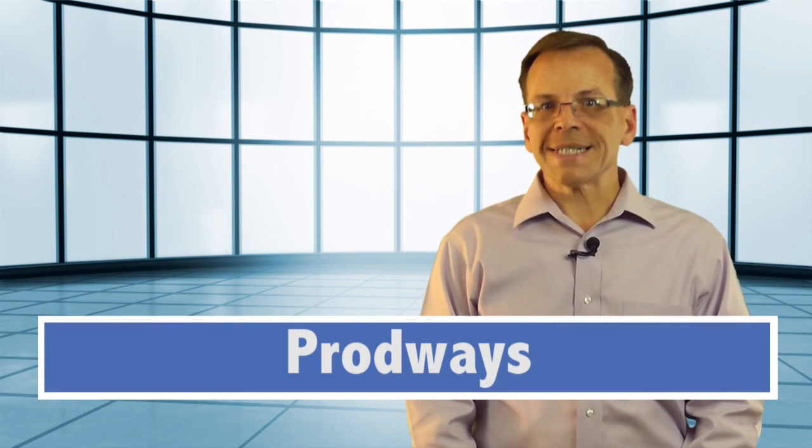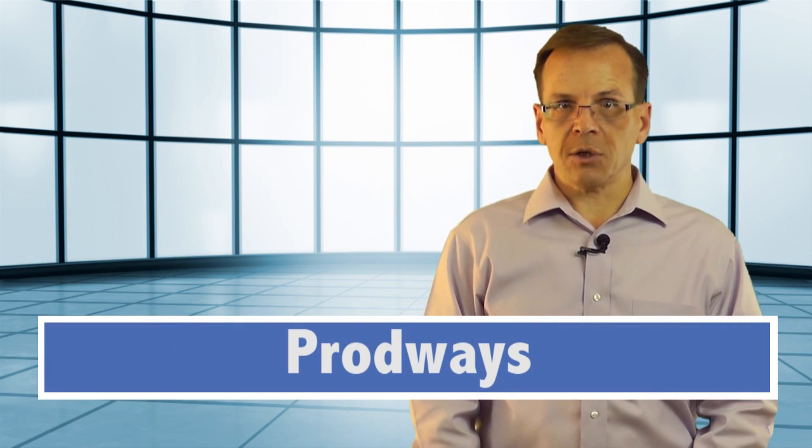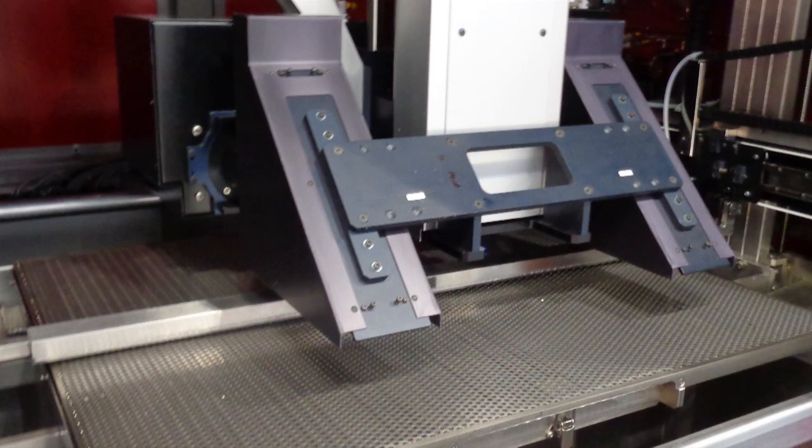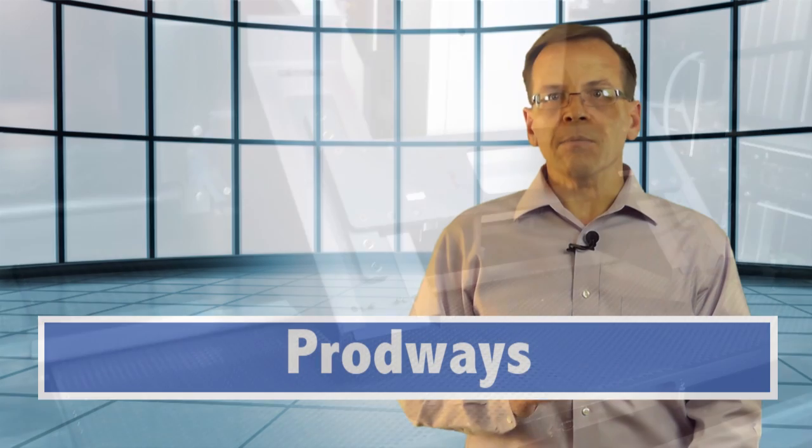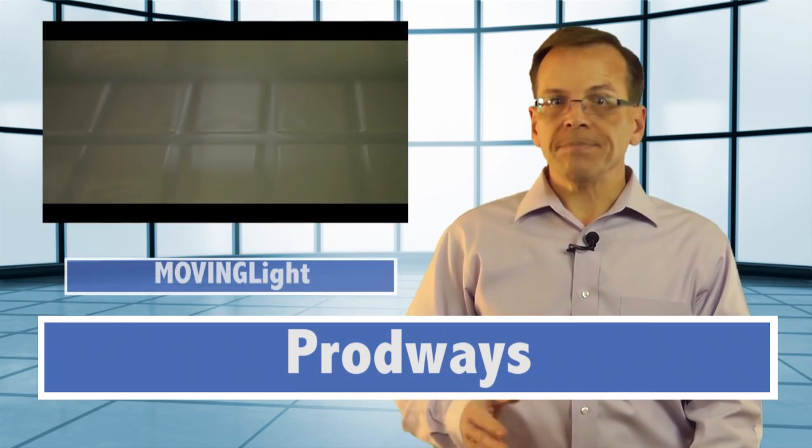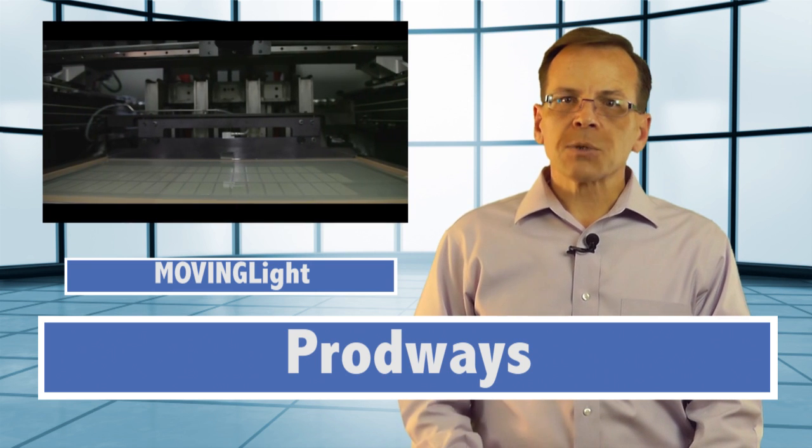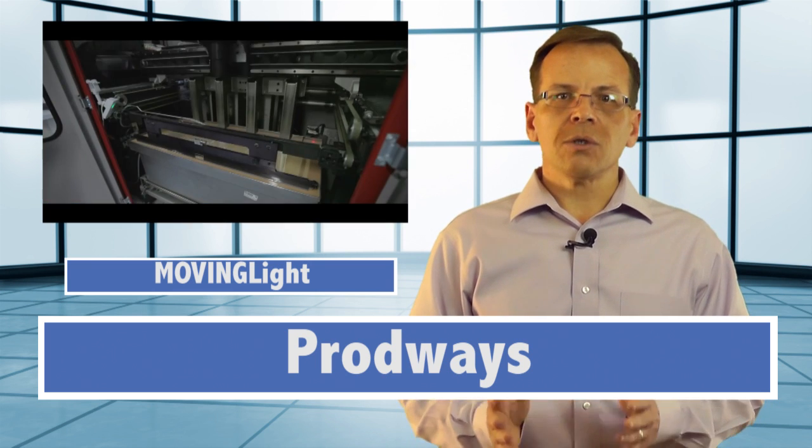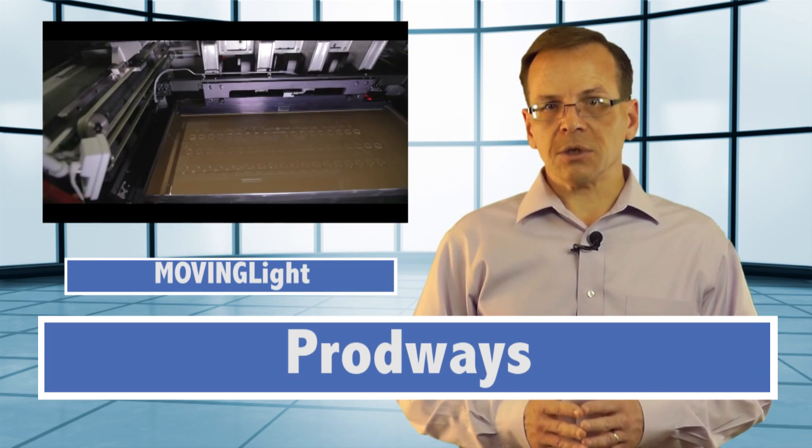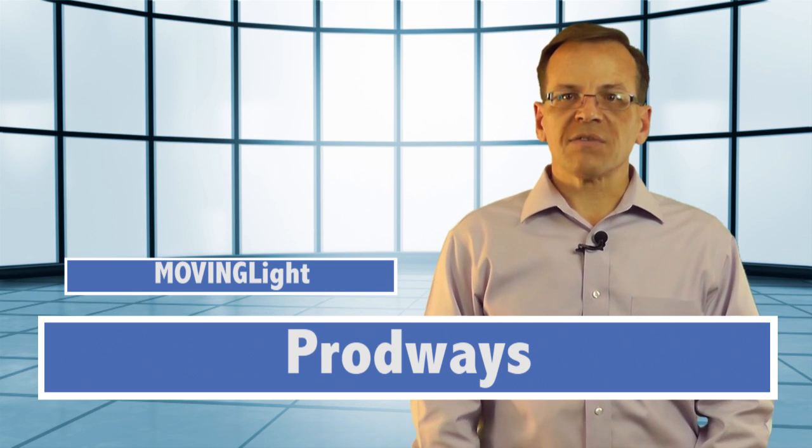Prodways, a new company out of France, has taken a different approach to the challenge of making larger parts with DLP. It mounts two DLP light engines on a gantry that moves from side to side and back to back. Moving light, as the company calls the process, allows Prodways to deliver high resolution across build areas of up to 33 x 26 inches. To make the process fast, it uses high powered UVA LEDs.